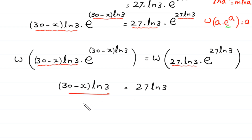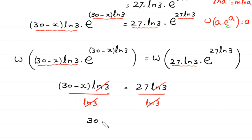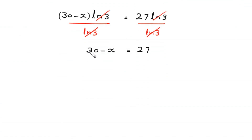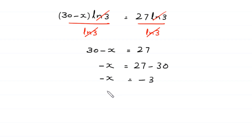Now from here, we divide both sides of this equation by ln of 3. So ln of 3 cancels on both sides, leaving us with 30 minus x is equal to 27. We move the 30 to the right side: negative x is equal to 27 minus 30, so negative x equals negative 3, therefore x is equal to 3. This is the final value of x and the final answer of this equation.